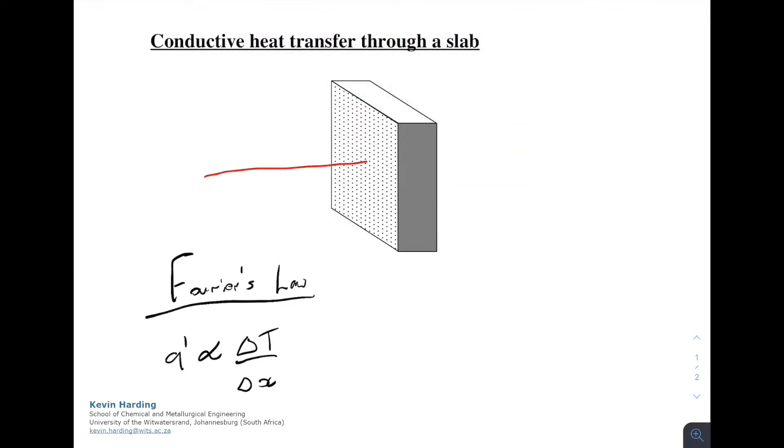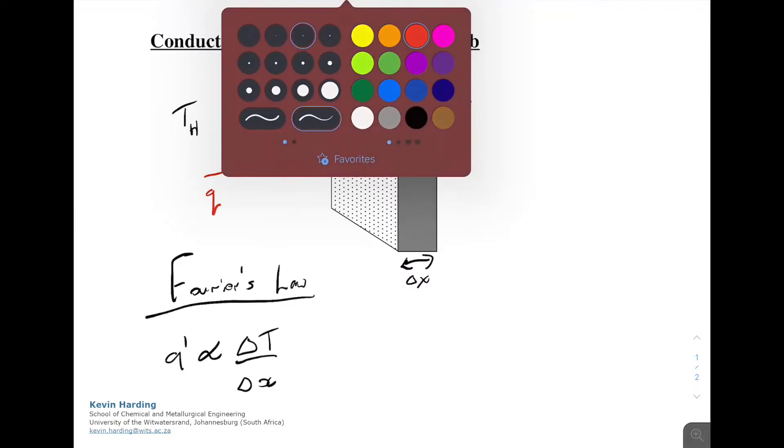Graphically, if we have heat flowing through a slab, Q flowing from left to right, it's proportional to the difference between the hot temperature and the cold temperature on either side. It's inversely proportional to the thickness of the slab, so the greater the thickness, the less the heat flow.